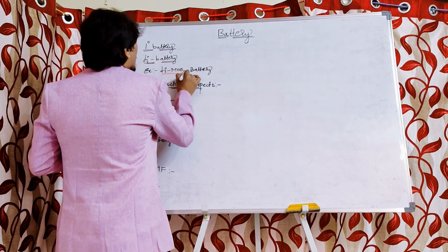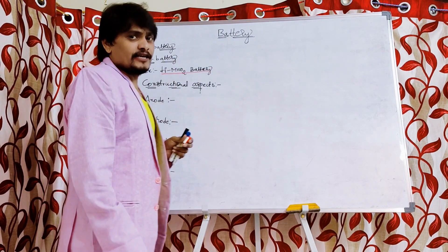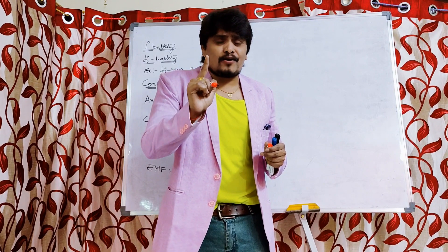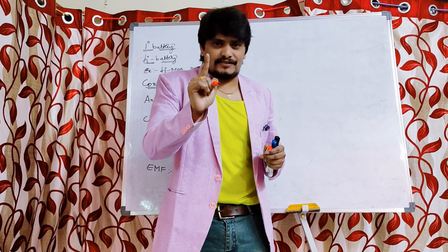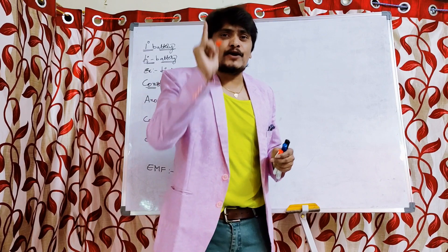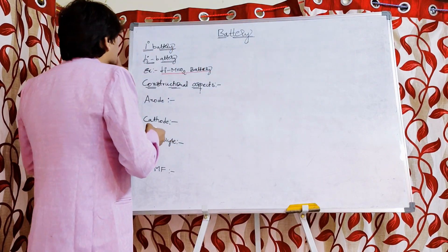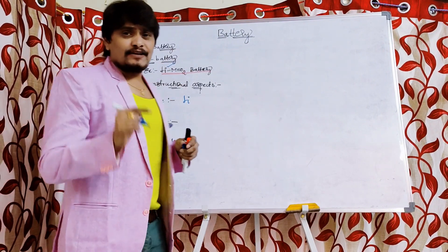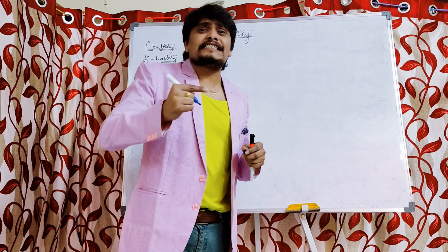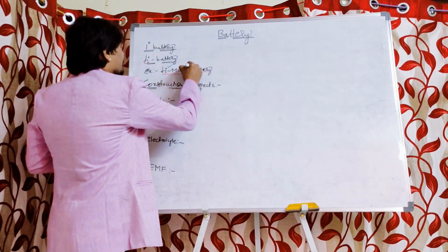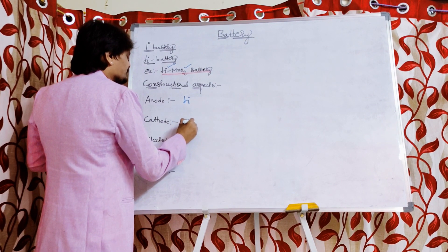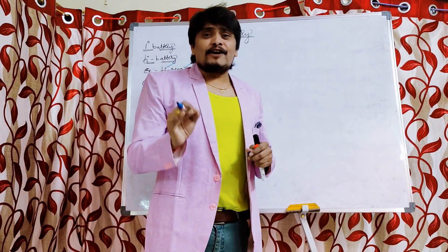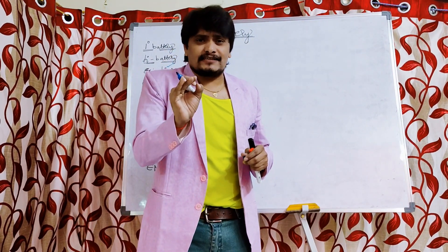Coming to our lithium manganese dioxide battery — according to the protocol, the first thing we discuss is the construction aspects. The anode of the battery is very easy to remember: lithium is the anode. Next, the cathode of the battery is manganese dioxide.